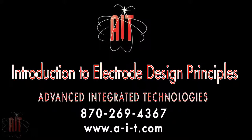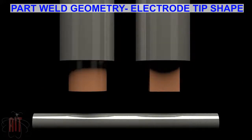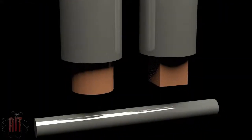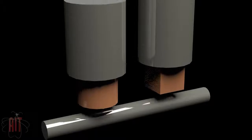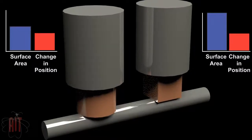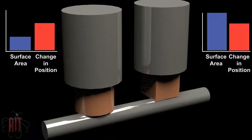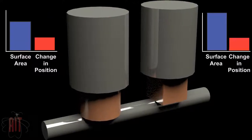Introduction to Electrode Design Principles by Advanced Integrated Technologies. This is an example demonstrating the principles of electrogeometry and how electrode tip shape can potentially affect the surface area of the contact between the electrode and the part when the position of the electrode in relation to the part changes, consequently altering the strength and quality of the weld.